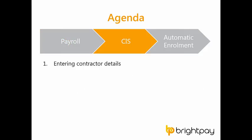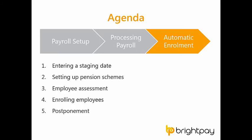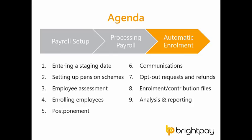Secondly, we'll take a look at our CIS functionality, which is new in the software for this tax year. We'll look at entering contractor and subcontractor details, how to verify subcontractors with HMRC, how to process subcontractor payments, and how to submit your monthly CIS returns to HMRC. We'll then finish the training session with automatic enrolment — setting up your pension scheme, employee assessment, enrolling employees, BrightPay's automated communications, and submitting files to your pension providers.